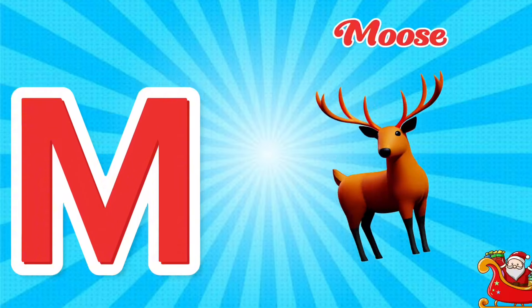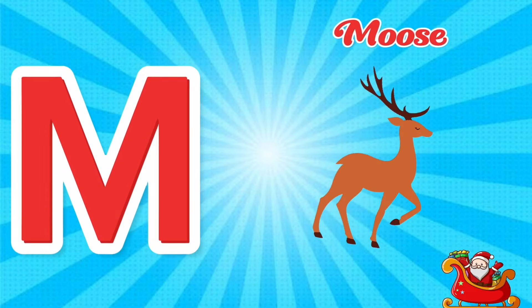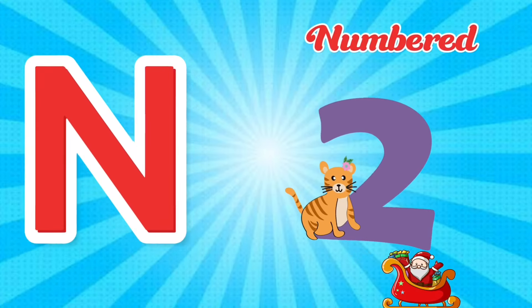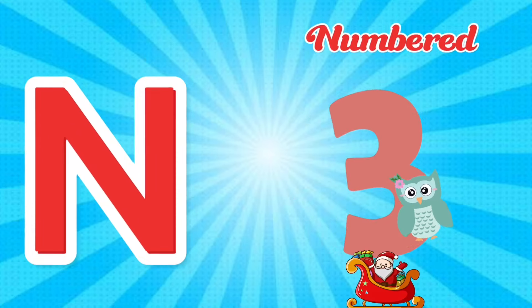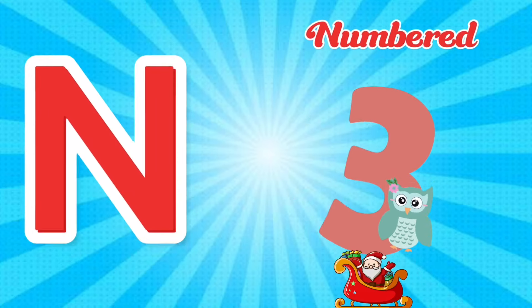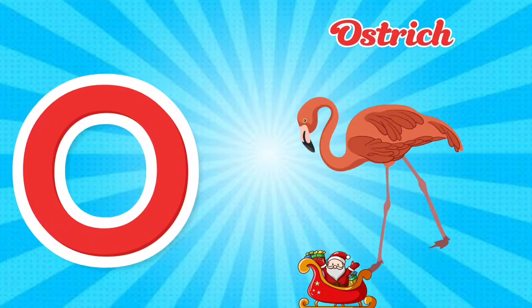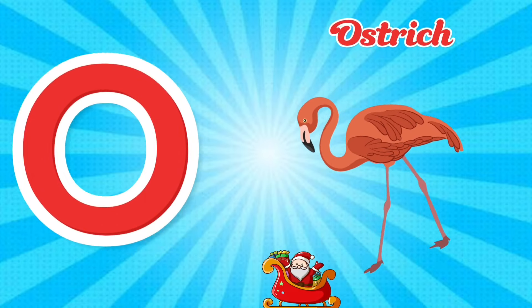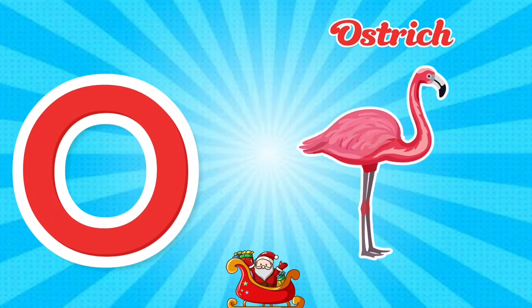M is for Moose. M, M. Moose, M is for Moose. M, M. N is for Numbat. N, N. Numbat, N is for Numbat. N, N. O is for Ostrich. O. Ostrich, O is for Ostrich. O, O.